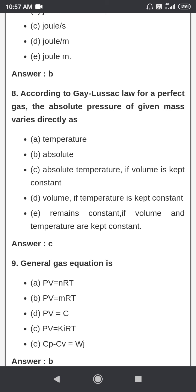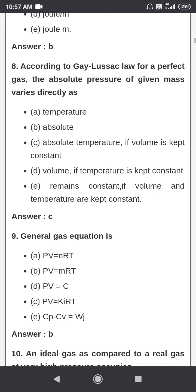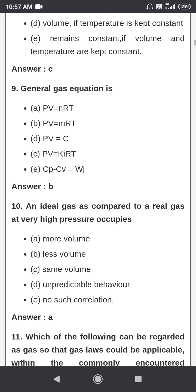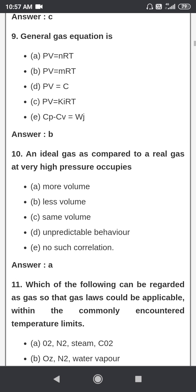According to Gay-Lussac's law, for a perfect gas the absolute pressure of a given mass varies directly with absolute temperature if the volume is kept constant.